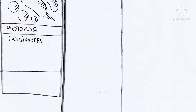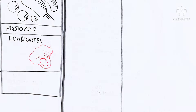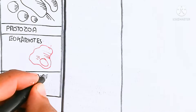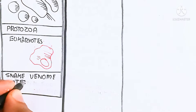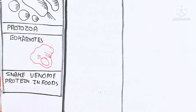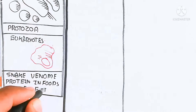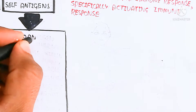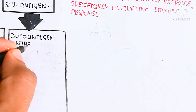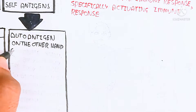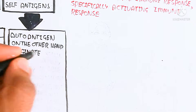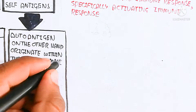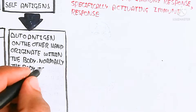The immune system also responds to bacterial infection, and protozoa — eukaryotes such as amoeboid cells — are also foreign antigens. Additionally, snake venom proteins, certain foods, blood of other individuals, and non-matching foreign organs such as liver or kidney transplants act as antigens. In such cases, our immune system will reject them.